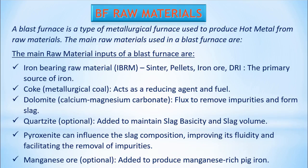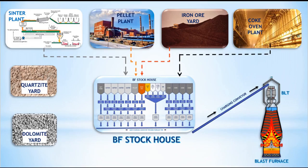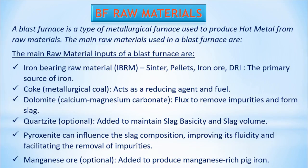Coke — metallurgical coal — acts as a reducing agent and fuel. Dolomite — calcium-magnesium carbonate — is a flux to remove impurities and form slag. Quartzite is optionally added to maintain slag basicity and slag volume. Pyroxenite can influence slag composition, improving its fluidity and facilitating the removal of impurities. Manganese ore is optionally added to produce manganese-rich pig iron.